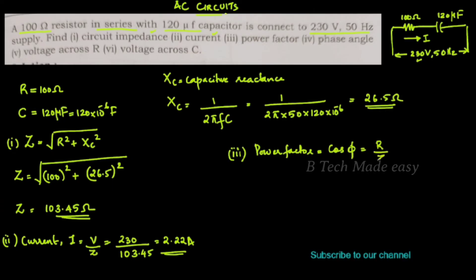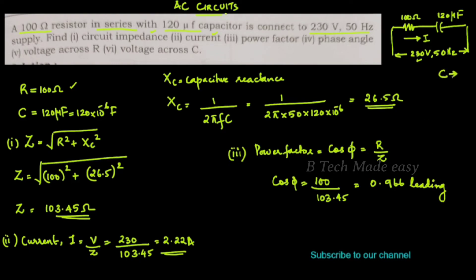Now the power factor. The cosφ equation is R / Z. Substituting R = 100 ohms and Z = 103.45 ohms, cosφ = 0.966. Since we have a capacitor in the circuit, this is a leading power factor. For an inductor it would be lagging, but for a capacitor it is leading.